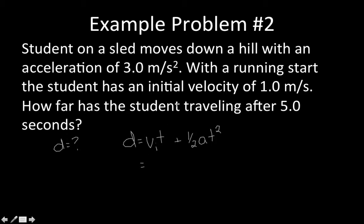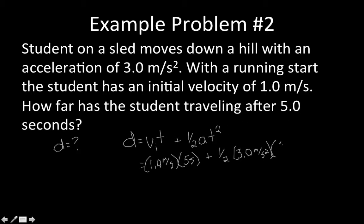So when I plug in those numbers: initial velocity is 1.0 meters per second multiplied by 5 seconds, and I add that to one half times the acceleration of 3.0 meters per second squared, multiplied by time squared — our time is 5 seconds. When I put that into my calculator, I get a distance of about 42.5 meters without sig figs. Rounding to about 43 meters with sig figs, we'd be all set.